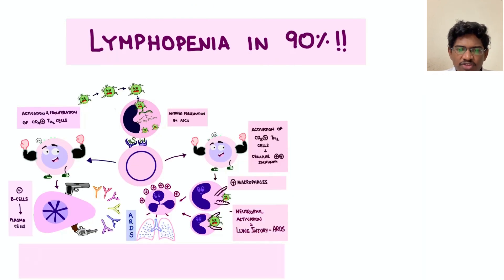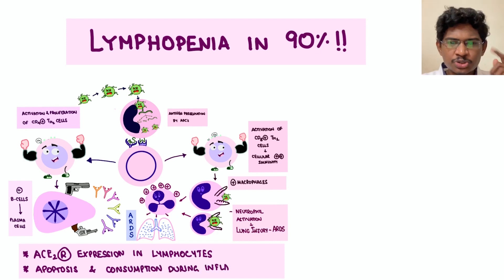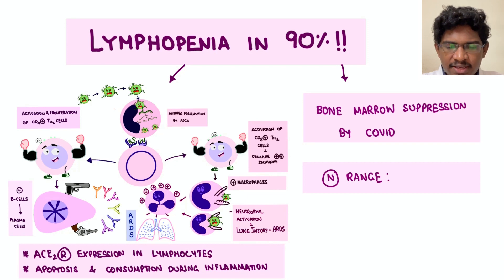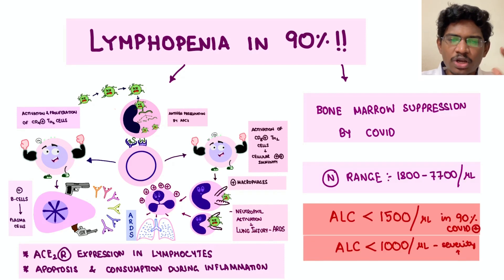If you are presented with a complete blood count of a patient, will you be able to tell whether he has COVID or not? Yes, there is a possibility — just see the absolute lymphocyte count. Lymphopenia is common in 90% of patients with COVID. Why? ACE2 receptor is expressed on the surface of lymphocytes, enhancing uptake of the COVID virus, depleting lymphocytes. Also, bone marrow suppression in COVID causes lymphopenia. The absolute lymphocyte count is normally 1800 to 7700. In COVID, it can decrease to less than 1500, and if it keeps decreasing below 1000, it is a severity indicator to be followed up with other inflammatory markers.